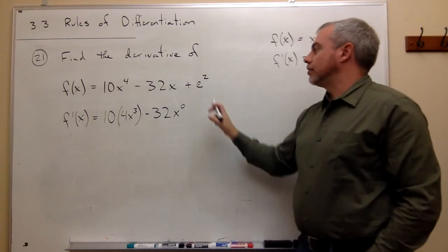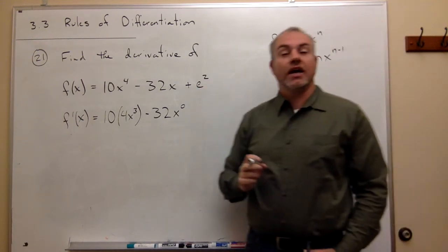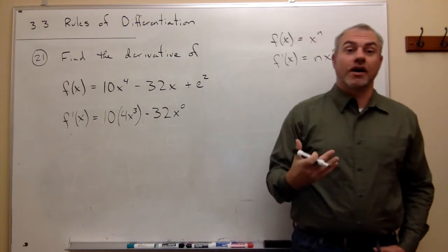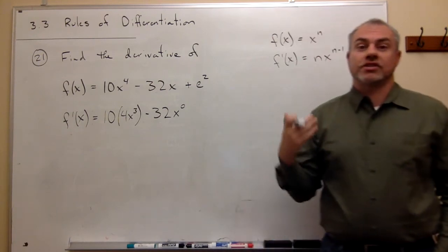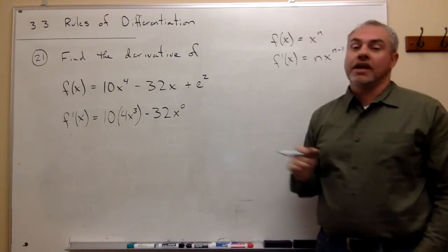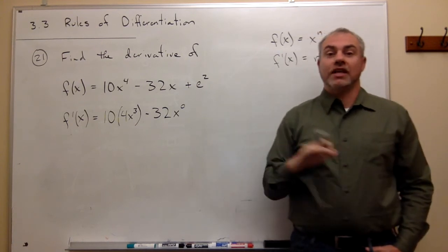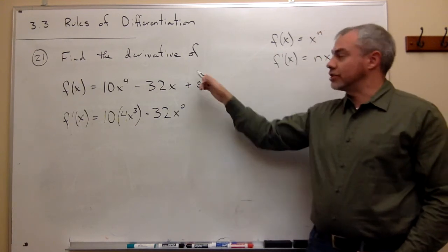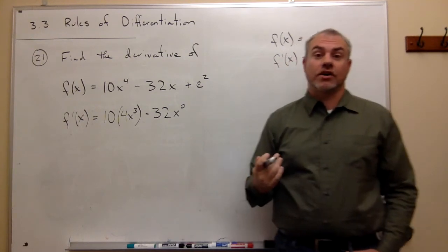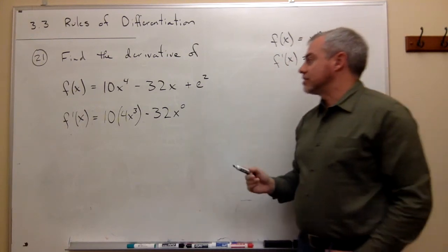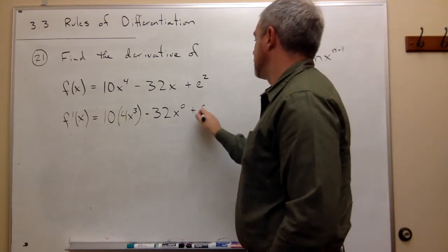And then I need to take the derivative of e squared. Now, e is itself just a number, so e squared is just a number. So that's a constant. And we know that the derivative of any constant, no matter how it looks, this one looks fancy, but it's really just a constant. The derivative of a constant is 0, so plus 0.